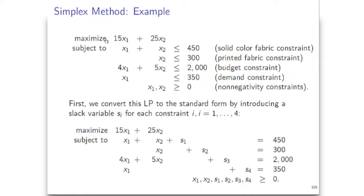The problem was as follows. We wanted to maximize the profit which was 15x1 plus 25x2, and then we had 1, 2, 3, 4 types of constraints and then non-negativity constraints.